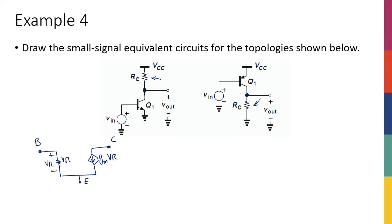Since the question is not telling me to ignore early effect, I have to include it. The impact of early effect on my small signal model is this R_naught. Now let's connect the rest of the circuit. Emitter is connected to ground, base is connected to the input signal source — that's my V_in — and collector is connected to a resistor to VCC.